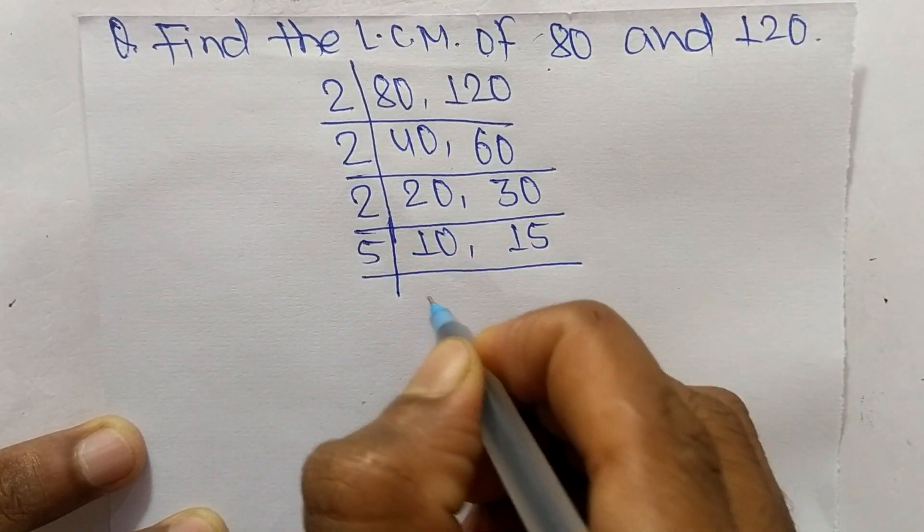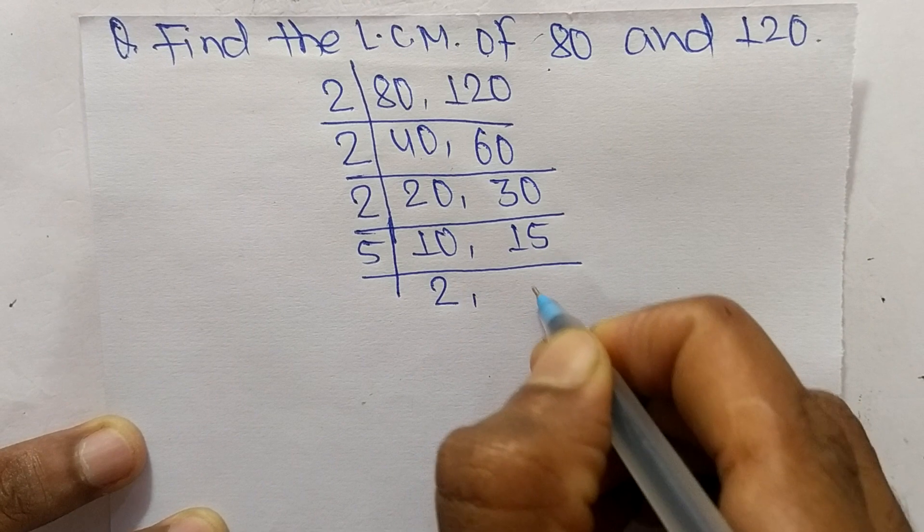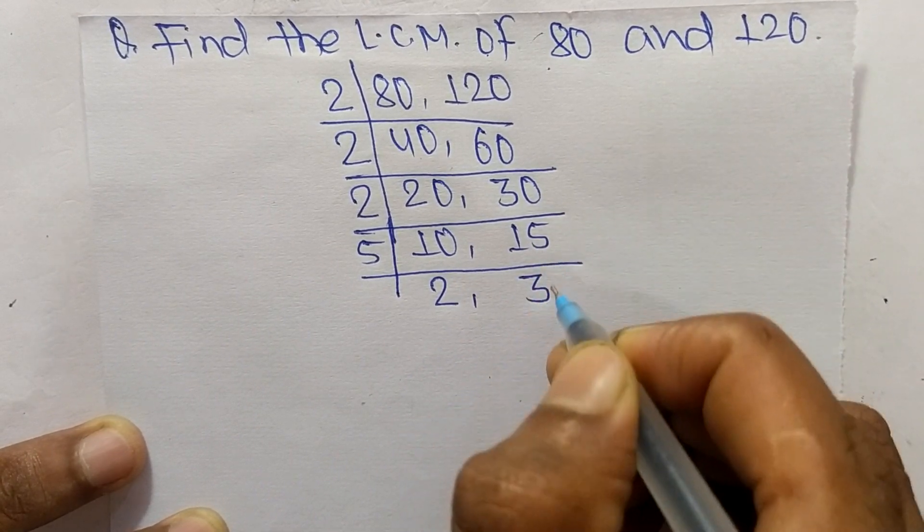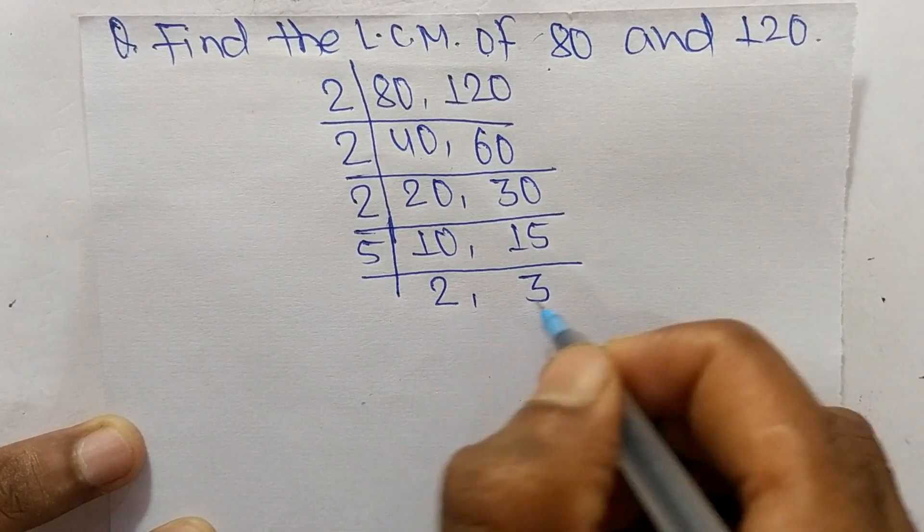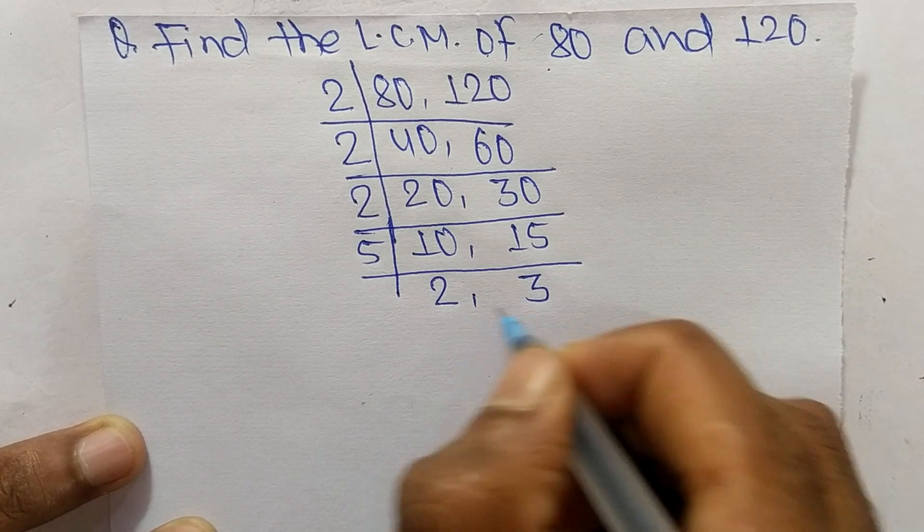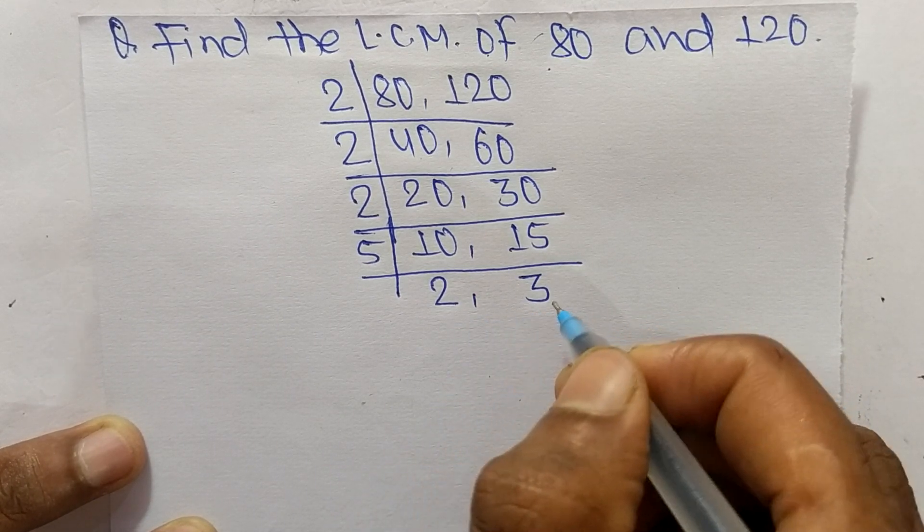So we take 5. So 5 times 2 equals 10 and 5 times 3 equals 15. At last we have 2 and 3 which are not exactly divisible by the same number.